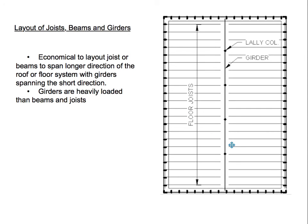Here we have our floor system. We have our joists shown as thin lines, and then we have our girders shown as thicker lines. We also have this circular object which is our lally columns. At the perimeter we have our bearing wall and studs. When laying out the joist beams and girders, we want the joists to span longer and the girder to have a shorter span.